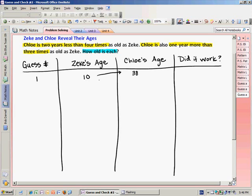Now what I'm looking for in the second clue is that same age. And if it's not the same age, then my guess for Zeke is not correct. So the second clue says Chloe is 1 year more than 3 times as old as Zeke. So I need to do 3 times Zeke's age, which is 30. 10 times 3 is 30, and then add 1. That would be 31. Notice 38 and 31 are not the same numbers. And therefore, my guess of Zeke's age did not work.